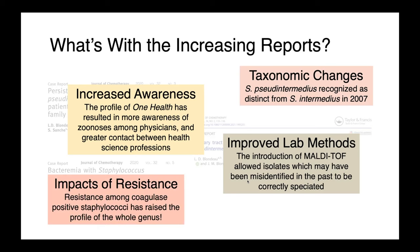Finally, we're seeing this as partially an artifact of the impacts of resistance. Resistance among coagulase positives has raised the profile of the genus as a whole. What we see with MRSA in people has led to concern about other potential reservoirs of methicillin-resistant staph and more research into these potential pathogens. So while we are seeing more reports of human infections with staph pseudintermedius, this doesn't necessarily reflect the emergence of a new pathogen — it may just be that we are now recognizing something that has been going on for a long time.